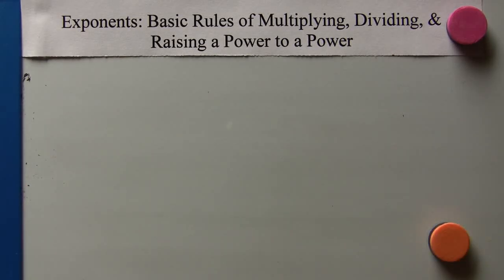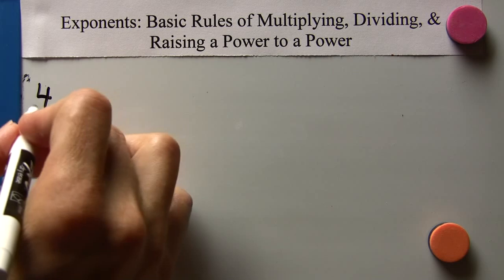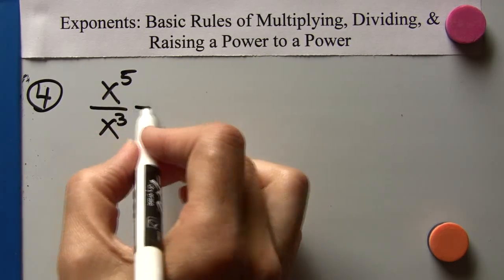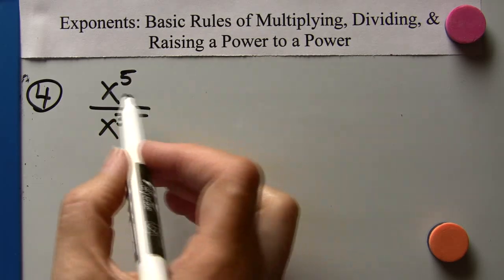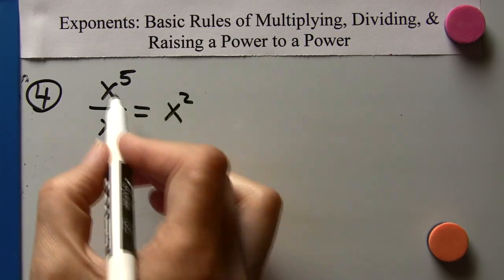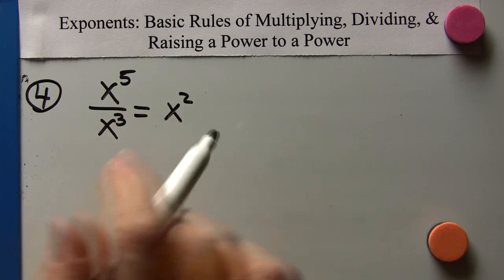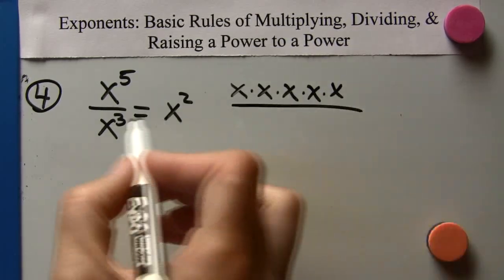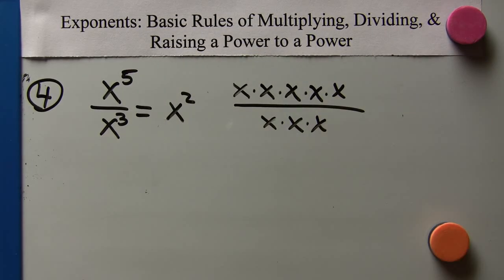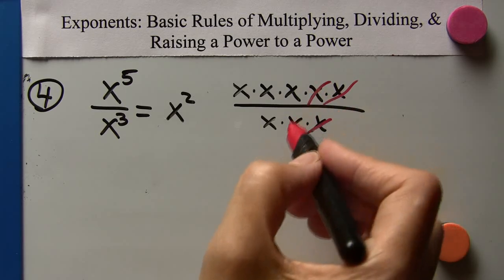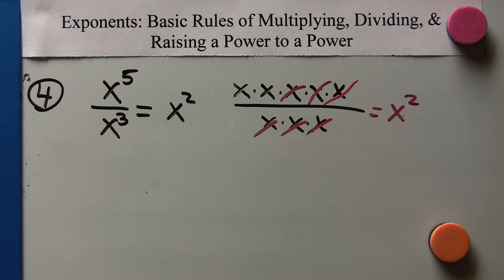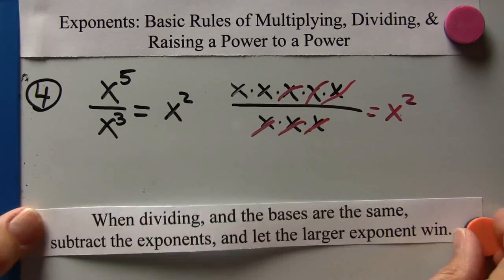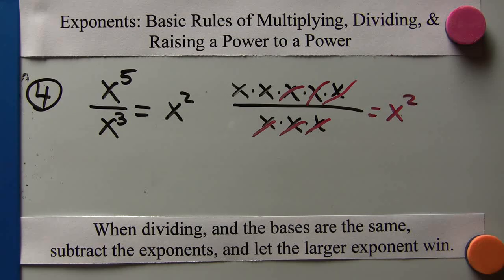Now let's go into dividing monomials. We have x to the fifth divided by x cubed. When we divide and the bases are the same, we subtract, and the larger exponent wins. So 5 minus 3 is 2, giving us x squared. Another way to see this: x to the fifth is x times x times x times x times x, and x cubed is x times x times x — cancel out like terms and we're left with x squared. The rule: when dividing monomials with the same base, subtract the exponents and let the larger one win.